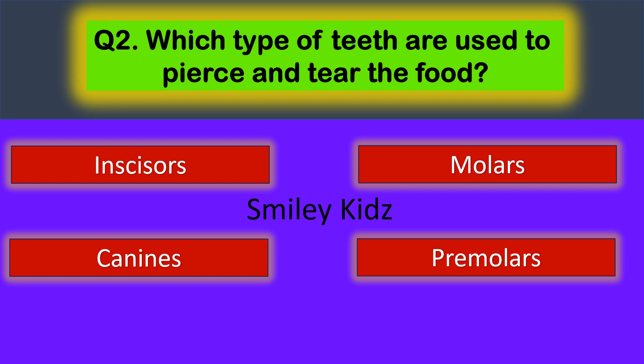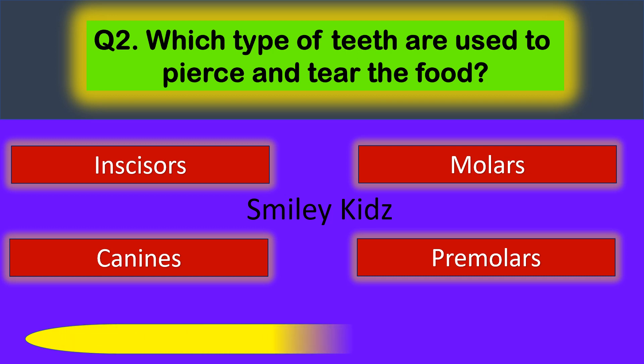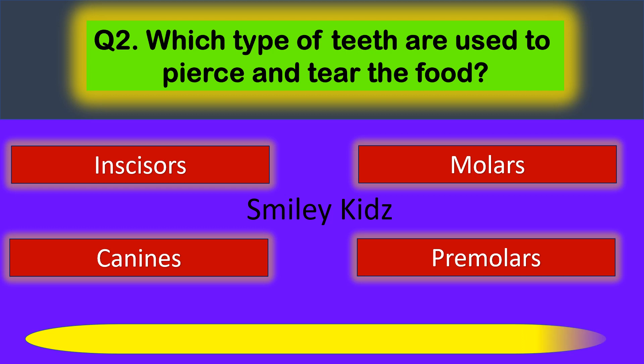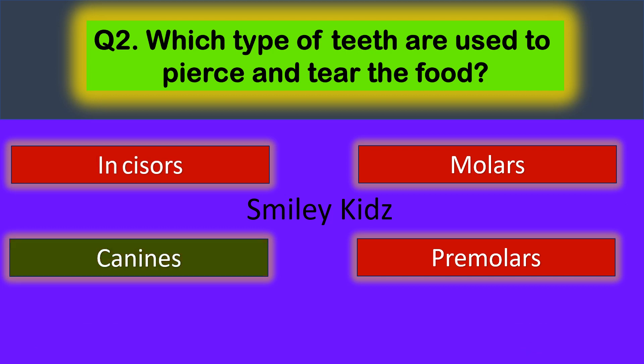Question number two: which type of teeth are used to pierce and tear the food? Your options are: incisors, molars, canines, and premolars. The correct answer is canines. Canines are used to pierce and tear the food.